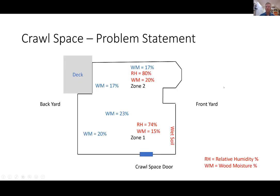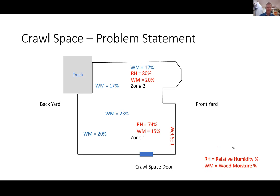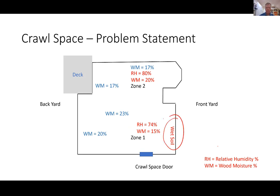Let's show you the problem statement. When you look at the diagram — this is a rough diagram of how my crawl space is laid out — you can see the front yard on the right, backyard on the left. The yard slopes from the back down toward the front. You'll see different elements where I've identified the relative humidity and the wood moisture as you go back and look at the different areas. The ones in red are the ones I started measuring on day one, and in zone one I started measuring a relative humidity of 74% and wood moisture around 15%. You can also see in this area that I have a challenge with wet soil.